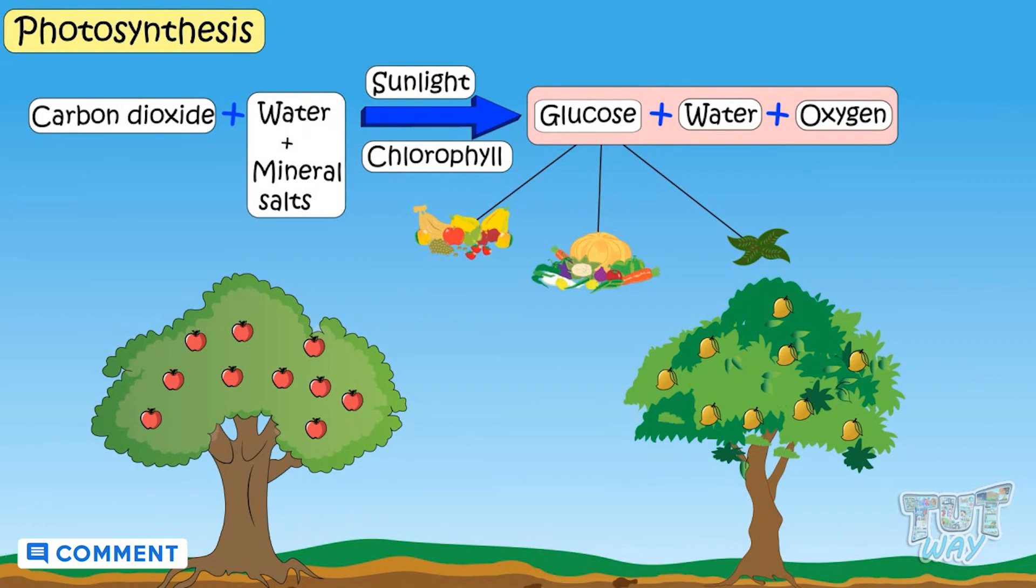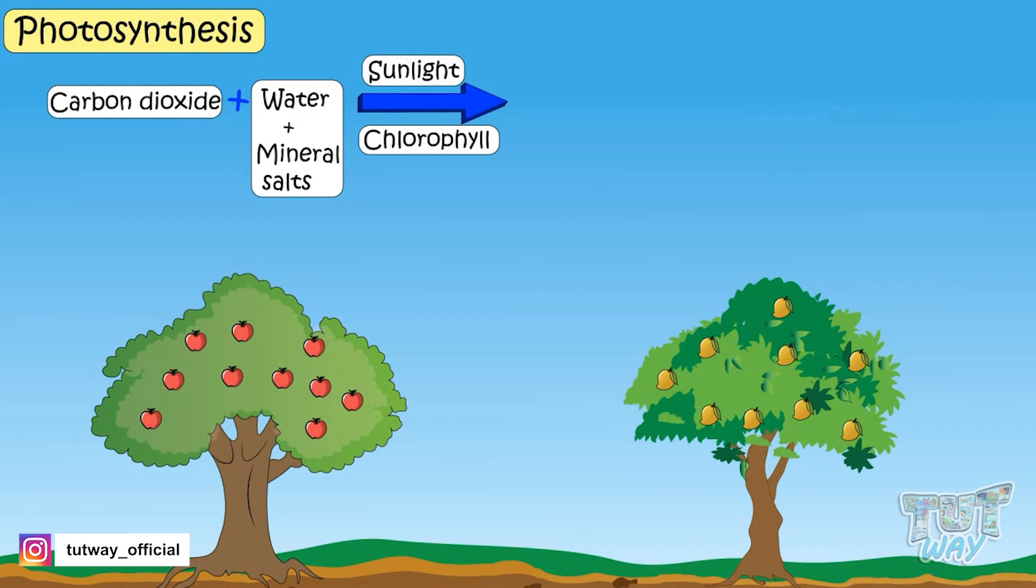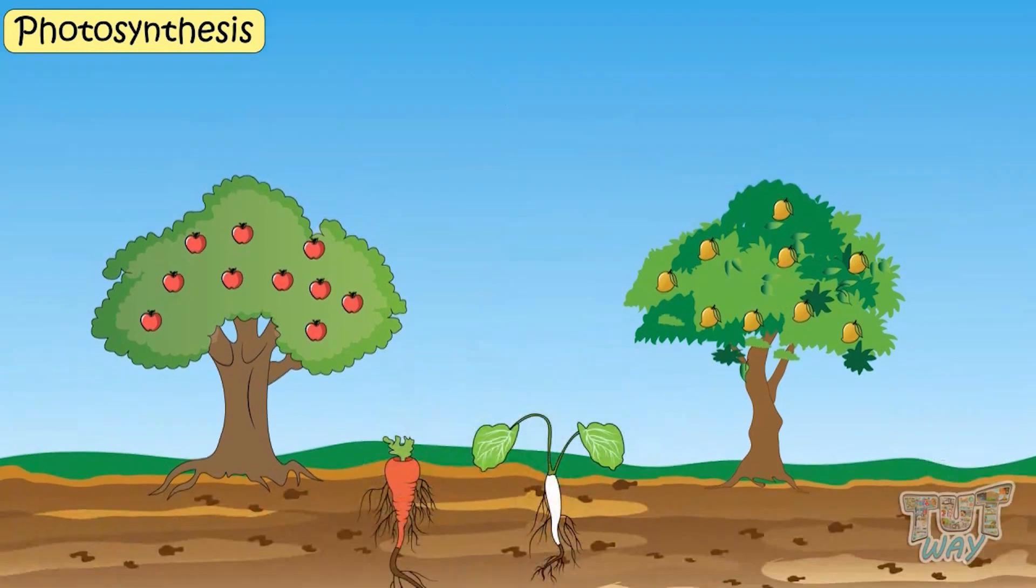In the form of different parts of plants that we can eat. So in this process, plants use carbon dioxide, water, minerals in the presence of sunlight and chlorophyll to make glucose, which is stored as edible parts of the plant, and also release some water in the form of water vapors and oxygen in the air. All fruits, vegetables, and different parts of the plant that we eat are prepared by plants with the process of photosynthesis.